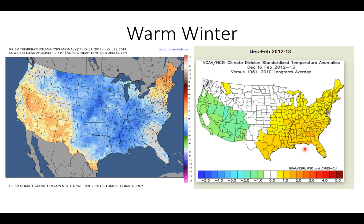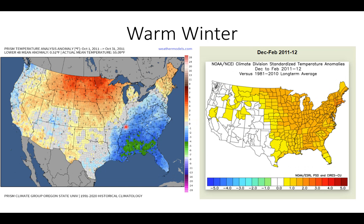Now looking at the warm winters. December 2012 to February 2013 showed much above normal temperatures across the eastern U.S. in yellow and orange, with below normal temperatures across the southwestern U.S. In contrast, October 2012 was quite below normal generally from the Rockies all the way into the central U.S., the northern plains, and to the Appalachian Mountains down to the Gulf Coast — a below normal October that was followed by an above normal winter season.